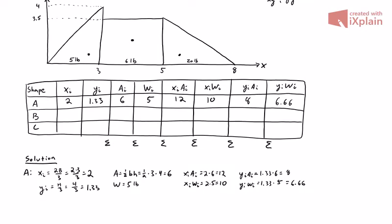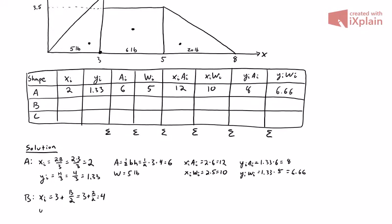Moving on to shape B, which is our rectangle. The base equation for the centroid of a rectangle is base over two. However, remember that's measured from the bottom-left corner, and the bottom-left corner of that rectangle is at x equals three. So we add that on: three plus base over two. The base goes from three to five, so the base is two. That gives us a centroid x-position of four.